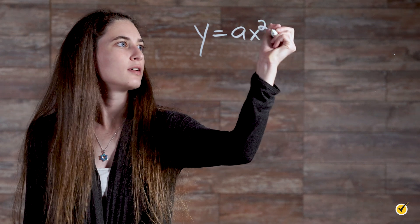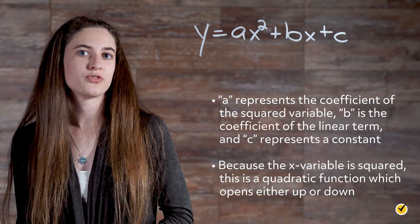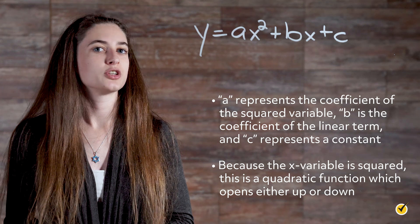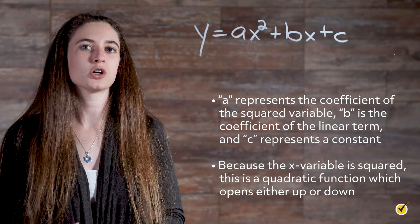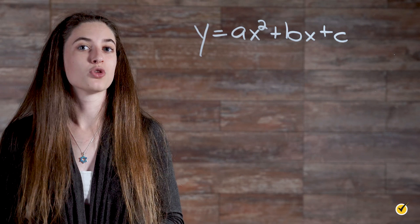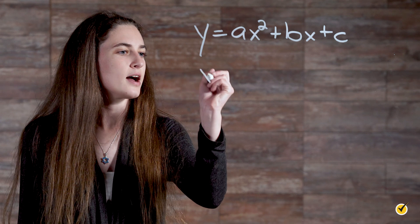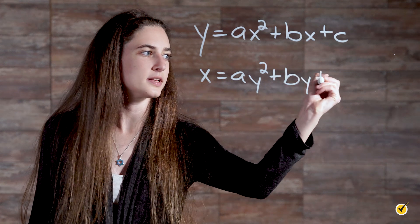To understand this further, we need to look at how quadratic equations are written. They are written using two basic forms. A standard form quadratic equation is written as y equals ax squared plus bx plus c, where a represents the coefficient of the squared variable, b is the coefficient of the linear term, and c represents a constant. Because the x-variable is squared, this is a quadratic function which opens either up or down. A quadratic equation with the y-variable squared would be written as x equals ay squared plus by plus c.